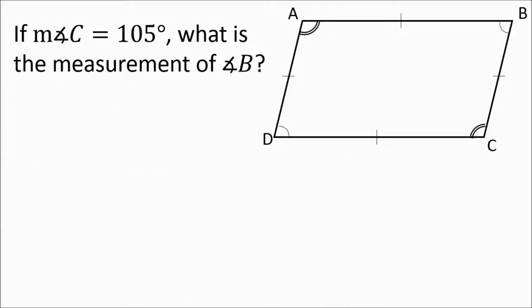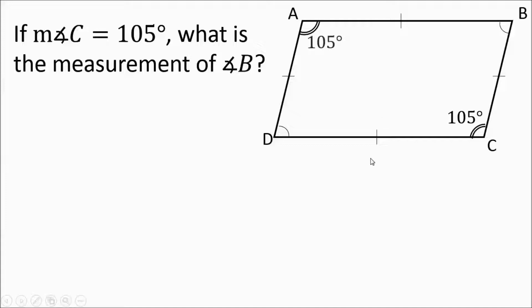We have this first figure. We need to make sure we understand the symbols in the language here. If the measurement of angle C equals 105 degrees, what is the measurement of angle B? They've given us that angle C is 105 degrees. Since the double arc and double arc are marked the same, that means this angle is also 105 degrees.